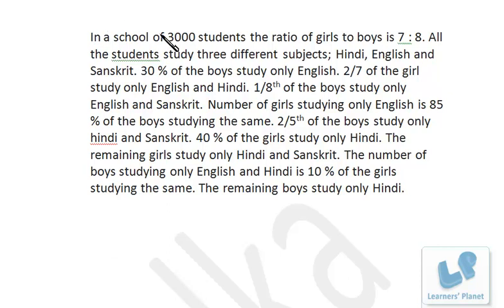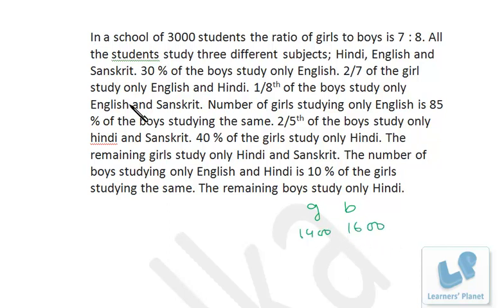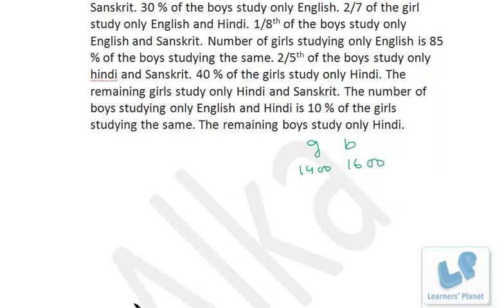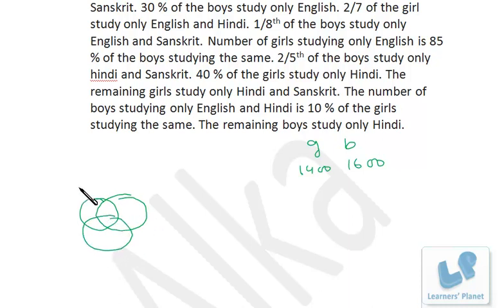In a school of 3000 students, the ratio of girls to boys is 7 to 8. 7 plus 8 is 15 and it is 200 times that, so it's 1400 girls and 1600 boys. All the students study 3 different subjects: Hindi, English, and Sanskrit. I draw the Venn diagrams for both girls and boys — Hindi, English, Sanskrit for girls and Hindi, English, Sanskrit for boys.